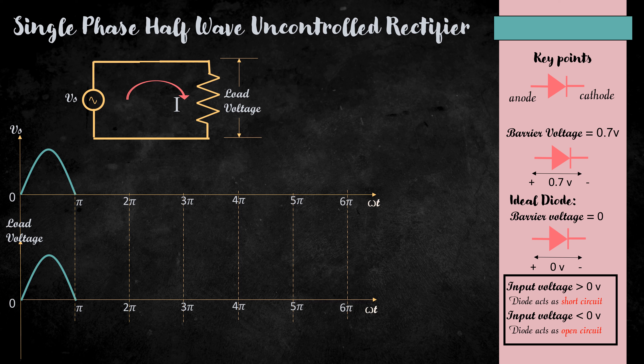Now, let's consider the input from π to 2π. Here, the input voltage is less than 0. Therefore, the diode acts as an open circuit and no current flows through it. So, the voltage drop across the load resistance is 0. Therefore, there is no load voltage from π to 2π.